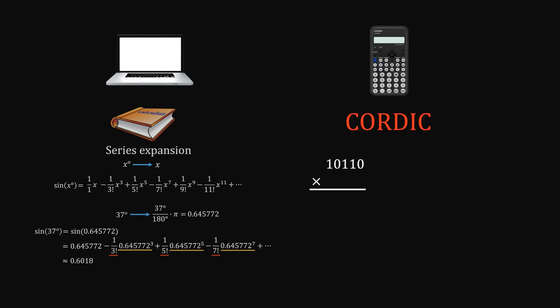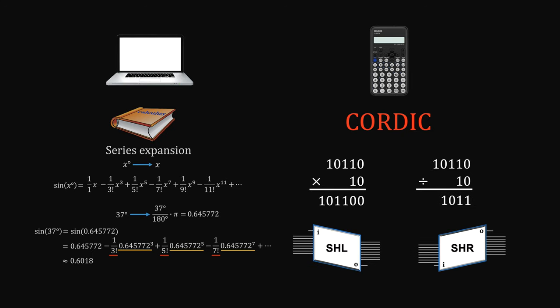So for base 2 system, if you multiply by multiples of 2, then you need to shift the input to the left. For divisions, if divided by 2, you shift the input to the right. So CORDIC algorithm makes use of that trick.